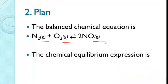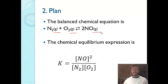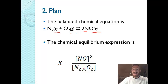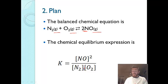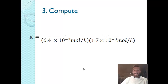The equilibrium expression is products over reactants. K equals the concentration of nitrogen monoxide squared — because there's a coefficient of 2 in front of NO in the balanced equation — divided by the concentration of N2 times the concentration of O2. Now we simply insert the numbers. The steps are: write the balanced equation with states, write the K expression, insert the numbers, and solve.